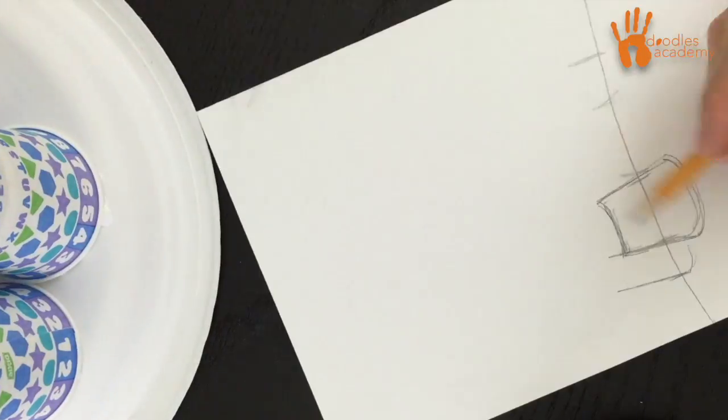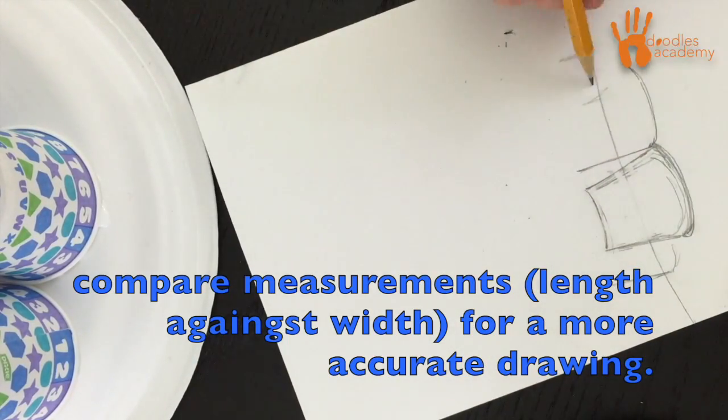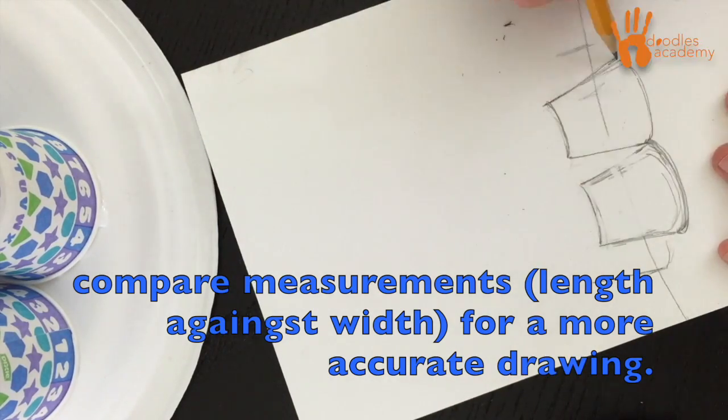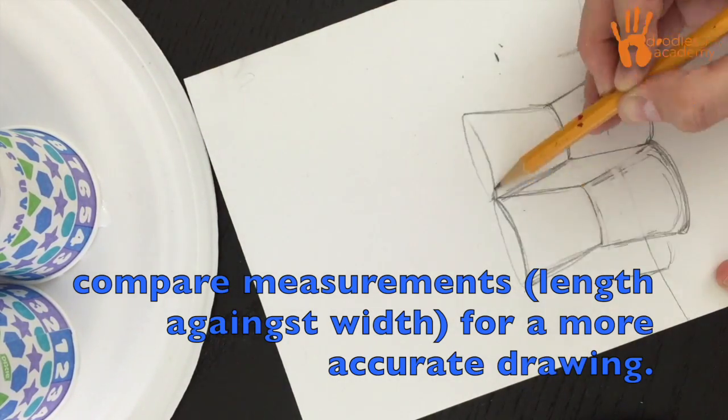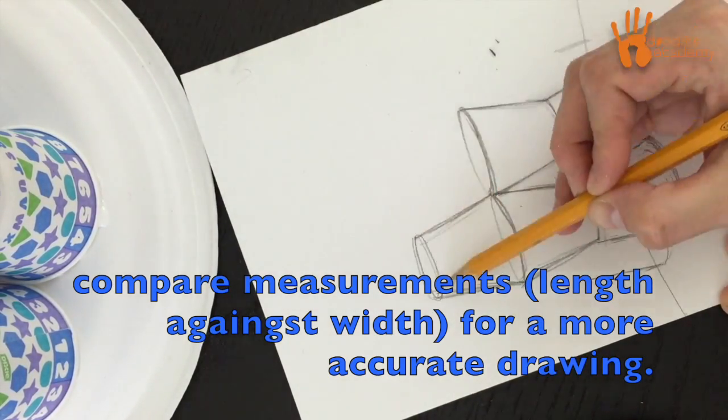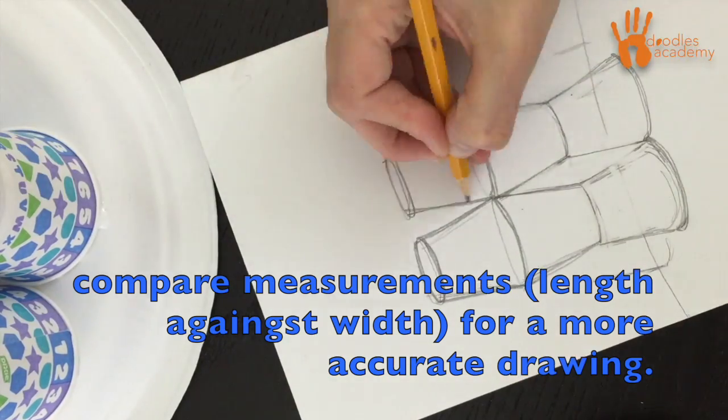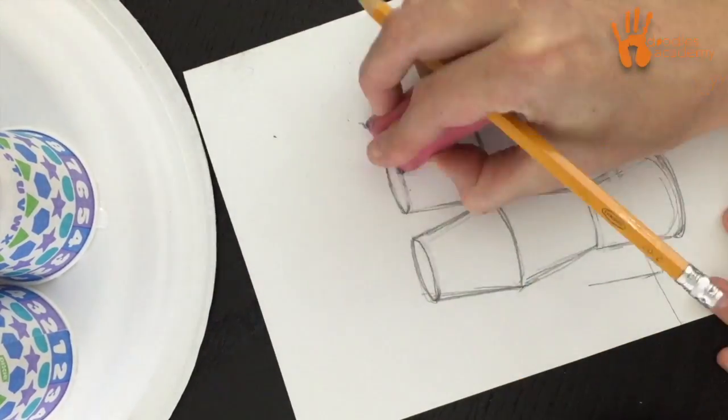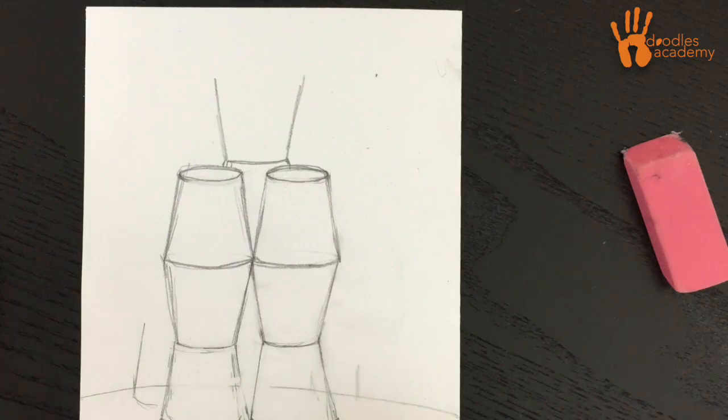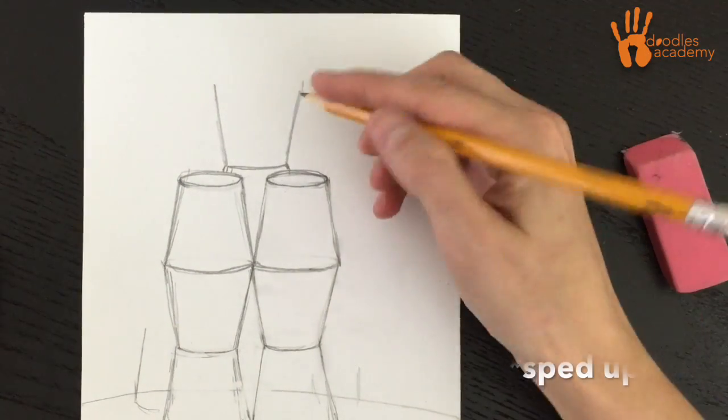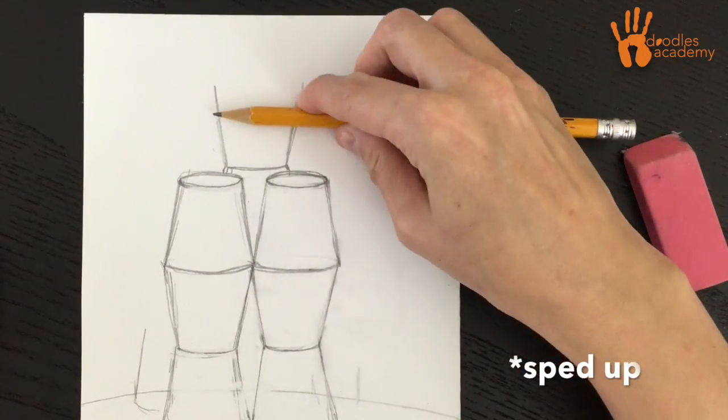Use this technique to compare parts of an object and make sure your proportions are correct. For example, if you're trying to draw one of the cups and it isn't coming out correctly, think about comparing the length of the cup against the width of the cup or measure how many openings tall the cup is. This technique allows you to double check the drawing that you eyeballed.